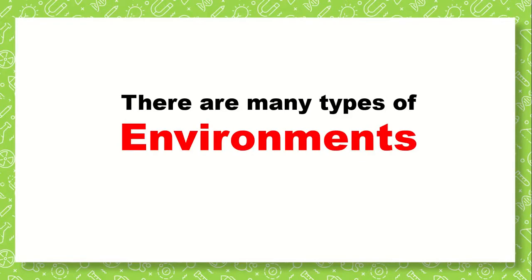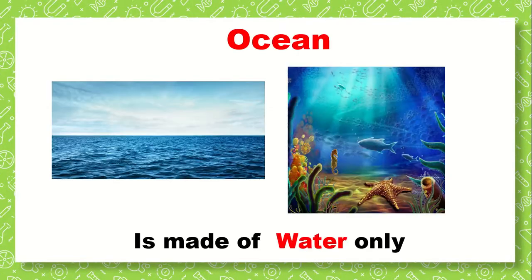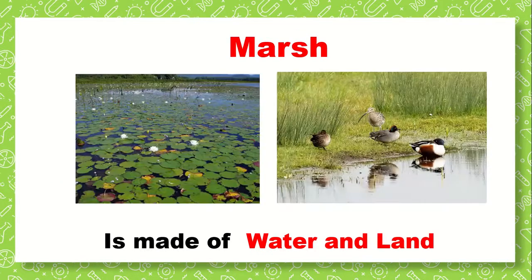Now there are many types of environments. Let's learn the first one. Ocean. Ocean is an environment and it's made up of water. Next we have marsh. Marsh is made up of water and land together — it's wet land.